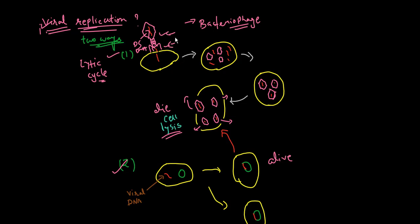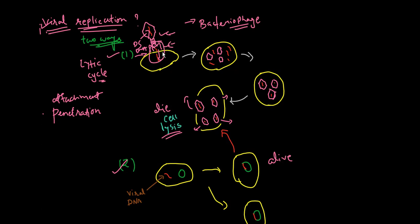The lytic cycle begins with attachment, where the tail of the bacteriophage attaches to a receptor site on the bacterial cell wall. After attachment, the bacteriophage uses its tail-like needle to inject its DNA into the bacterium — a process called penetration. The bacteriophage uses an enzyme, lysozyme, in its tail to break down the cell wall and enable DNA injection.